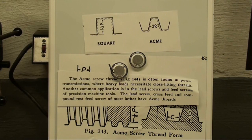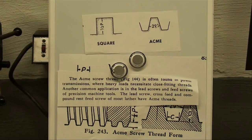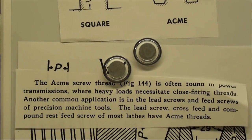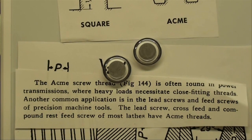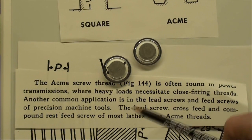You can pause these videos if you want to read some of this stuff. These pictures came either from the South Bend Lathe Book or from the Atlas Lathe Book, so I'd like to give them credit. An Acme screw thread is often found in power transmissions where heavy loads necessitate close-fitting threads. Another application is in the lead screws and feed screws of precision machine tools. The lead screw, cross-feed, and compound rest feed screws of most lathes have Acme threads. A lot of them are left-hand Acme threads as well.